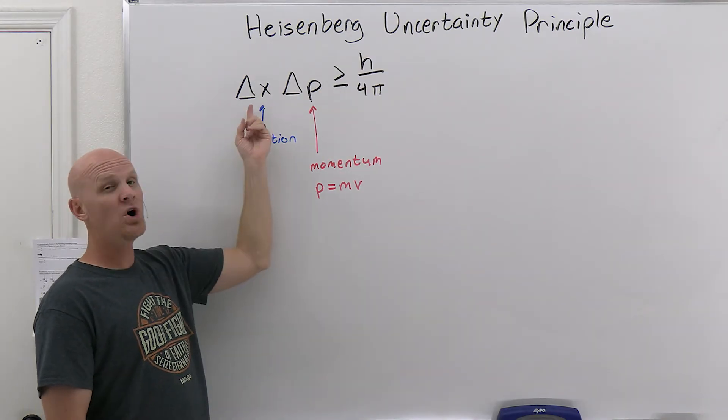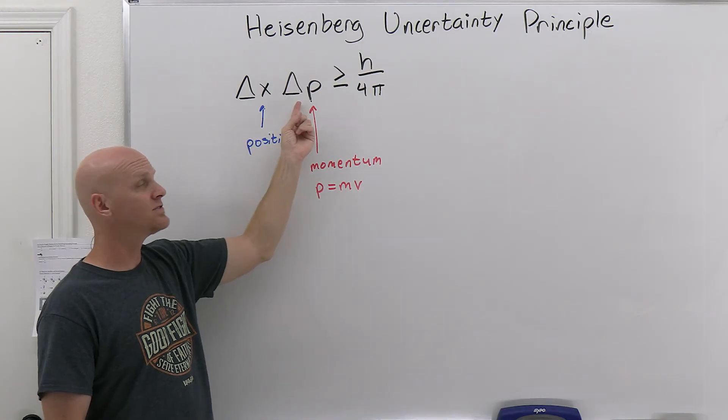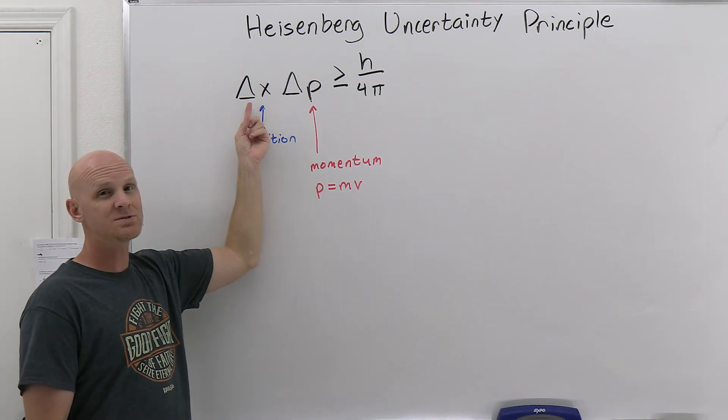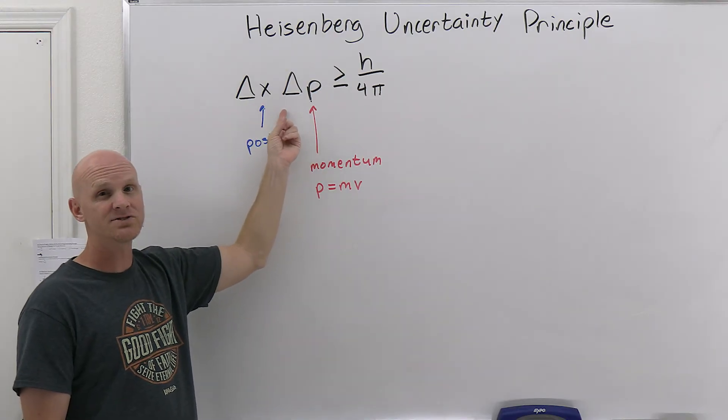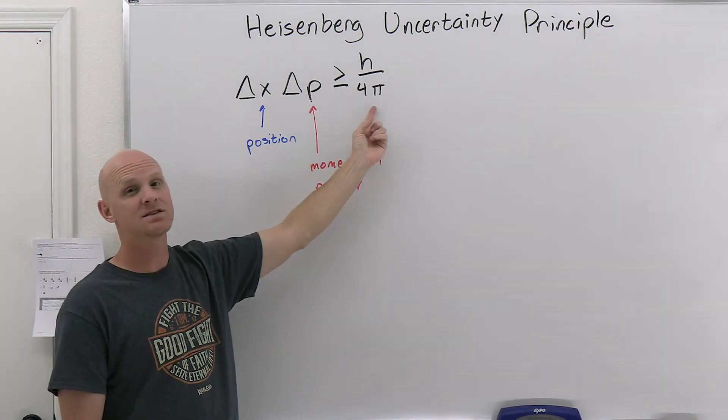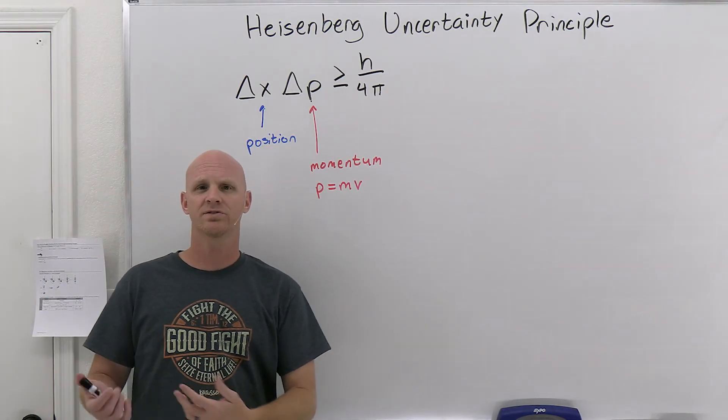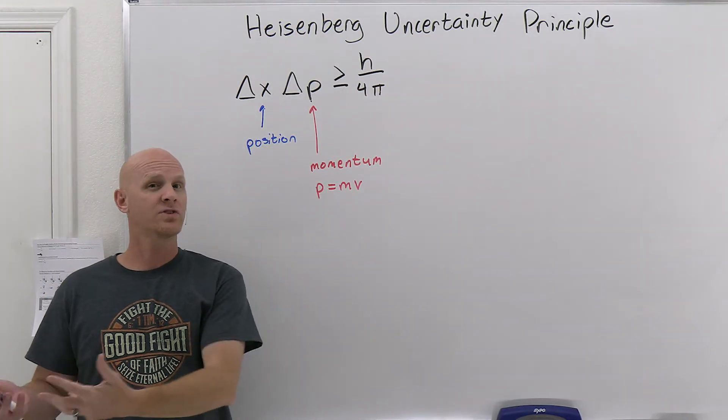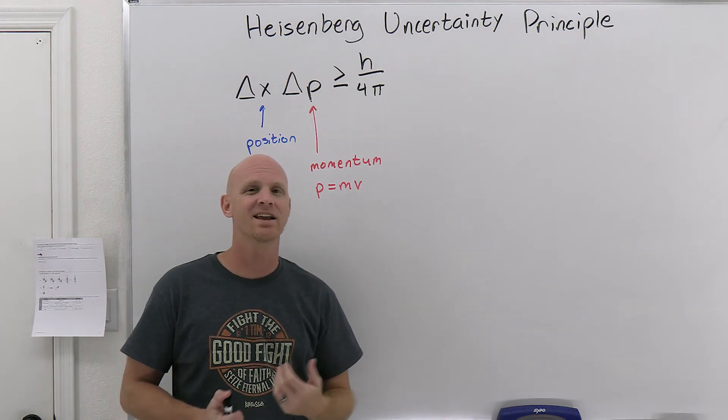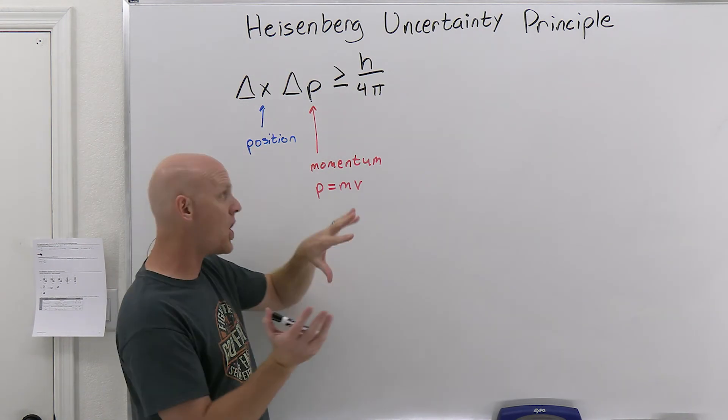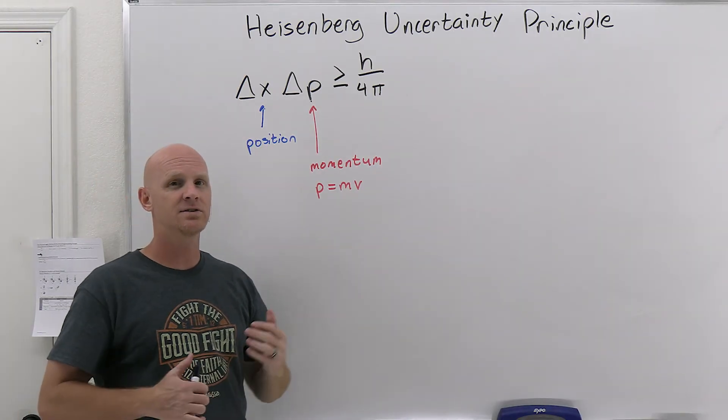And it turns out the better you know where it is, then the less you're going to have to know where it's going. So if you have a lower uncertainty in its position, well, then you're going to have to have a higher uncertainty in its momentum, because that's the minimum value right there. And so the better you know where an electron is, the less you know where it's going. And the more you know where it's going, well, then the less you know where it is. It's kind of this funky conundrum. And there's a couple different ways to think about it, but that's ultimately the level that you need to know it.